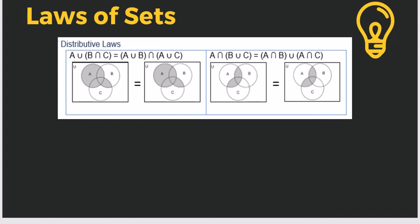Let's have the distributive law. We have a shaded region that we need to obtain. For example, A union (B intersect C): we first take the intersection of B and C, then take the union with A. So we add the whole of A together with the intersection of B and C. This gives the distributed shaded region in the Venn diagram.